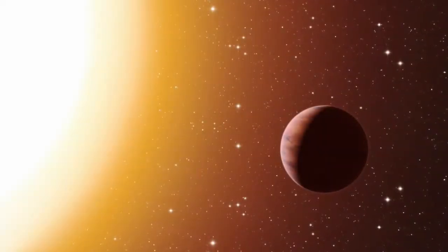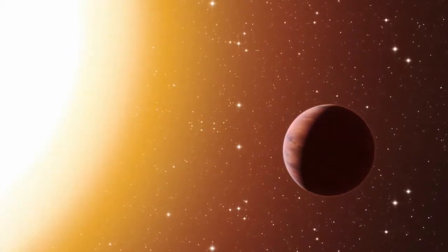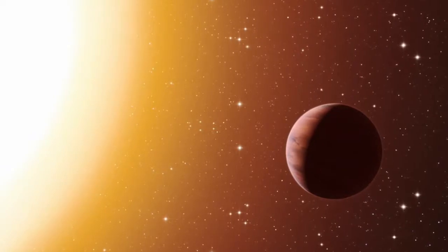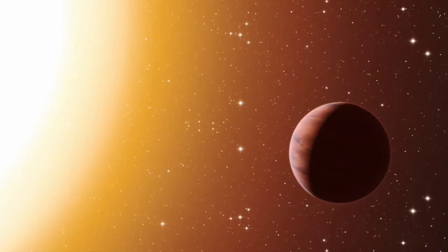Most people think of Vulcan as the homeworld of Mr. Spock and his fellow Vulcans in the Star Trek universe. But there was a time when astronomers thought there might be a real planet Vulcan going around the Sun inside the orbit of Mercury.